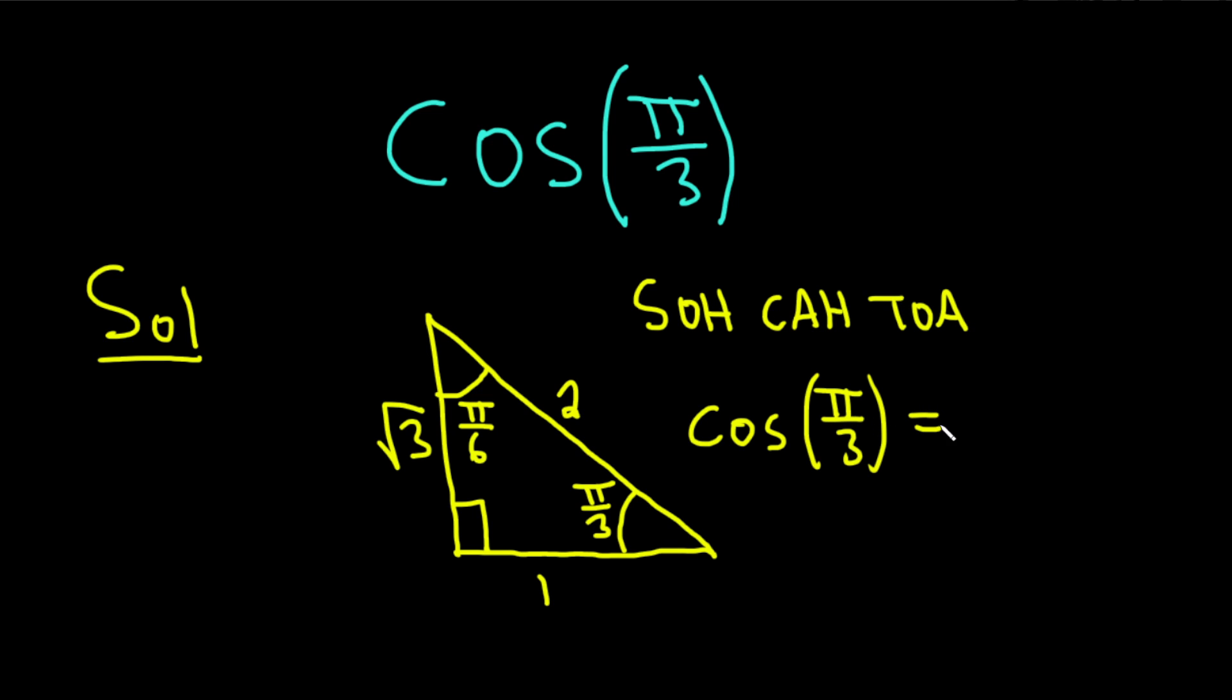So cosine is adjacent over hypotenuse. So we're looking at pi over 3, and we want the side that is adjacent to it. That's going to be 1. And it's over the hypotenuse, which is 2. So it's adjacent over hypotenuse. And that's the answer.